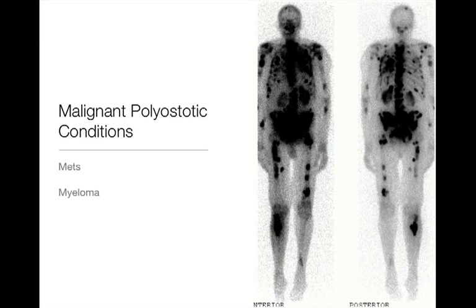Malignant polyostatic conditions are pretty straightforward. It really boils down to: is this a metastasis of some sort, and can we think about what it could be based on how it looks? And then multiple myeloma. Other things like lymphoma and leukemia could also cause it, but mets and myeloma are by far the most common malignant polyostatic conditions.